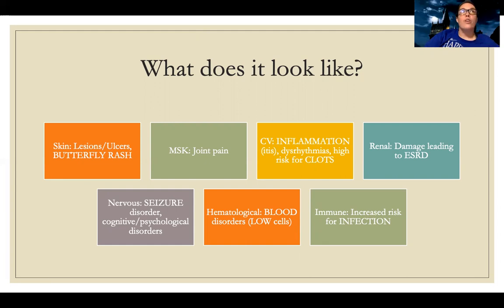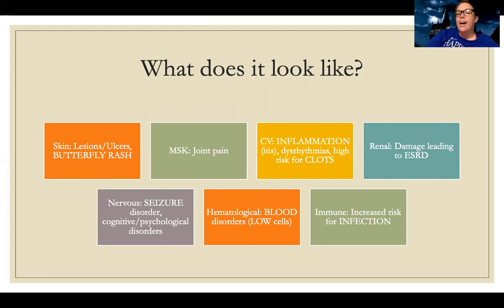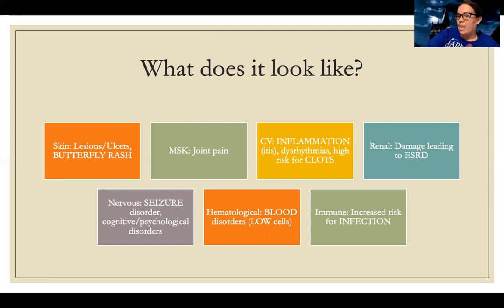The cardiovascular system can be affected. They have all the 'itises' — the inflammations — myocarditis, pericarditis, all those things from cardiac. They can have abnormal heart rhythms and also a high risk for clots. Depending on the patient, some are really high risk for clots and some are really high risk for bleeding — we'll talk about that shortly.